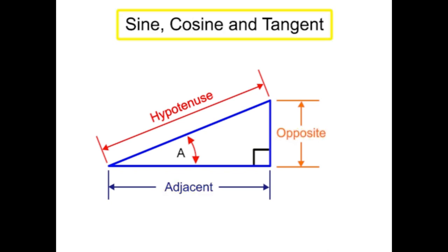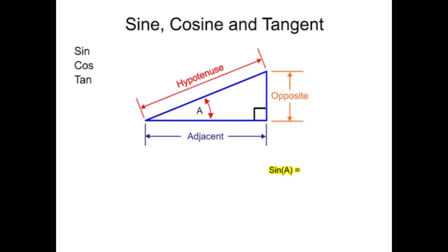Sine, cosine, and tangent are the three main functions in trigonometry and are often shortened to sin, cos, and tan. These functions relate the ratio of the sides of a triangle to its angles. For instance, the sine of an angle is equal to the ratio of its opposite side and hypotenuse. Cosine is equal to the ratio of the adjacent side and hypotenuse. And tangent is equal to the opposite side and the adjacent side.